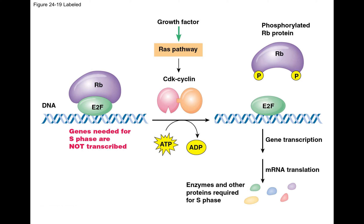When a growth factor arrives on the outside of the cell, say in the blood, it triggers a cell signaling pathway called RAS. RAS will activate a cyclin-dependent kinase through its cyclin, and that CDK-cyclin will be active to phosphorylate substrates. One of the substrates they phosphorylate is RB, and when RB is phosphorylated, it no longer binds to E2F.